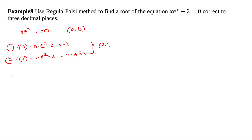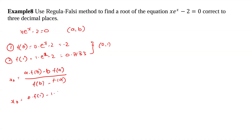Now we need to calculate the initial approximation using the formula: x0 is equal to a·f(b) minus b·f(a), divided by f(b) minus f(a). Substituting a = 0 and b = 1, with f(0) = -2 and f(1) = 0.7183, we get x0 is equal to 0.7358.